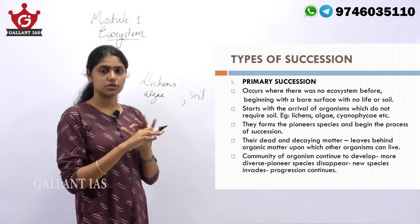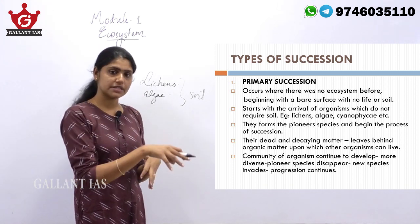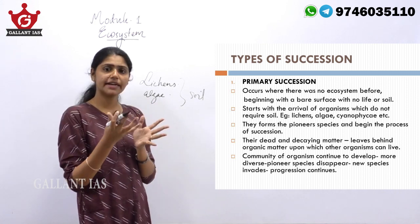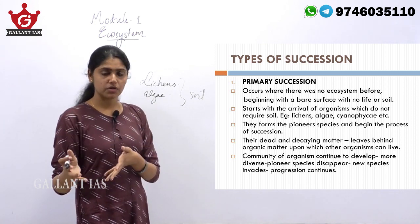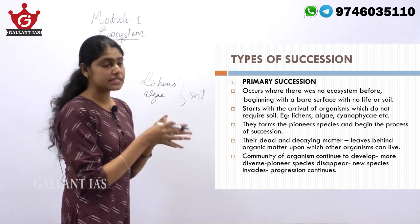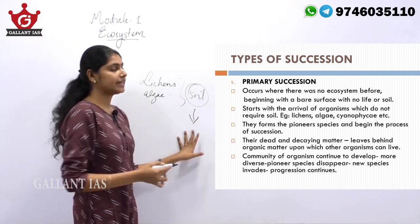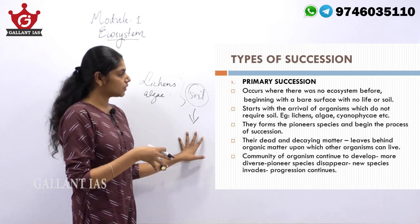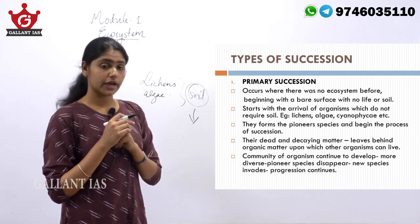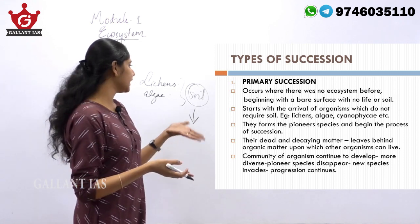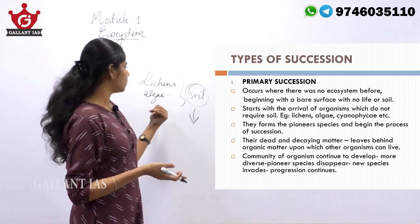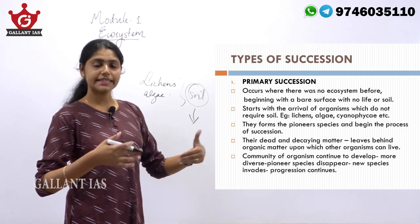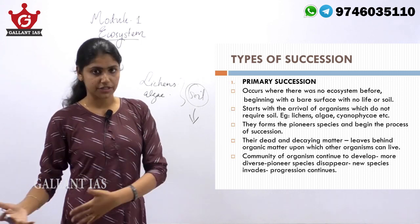Once that particular bare surface had no ecosystem at all, lichens came and inhabited it. With further succession, their dead and decaying matter along with weathering helped in the formation of soil. This is conducive for other organisms that require soil for their survival, so other communities of organisms continue to develop, replacing the earlier species as succession continues.